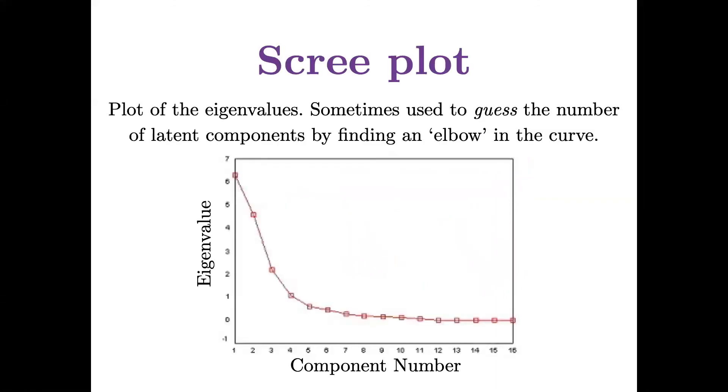A very common way to start is to plot the eigenvalues. So here it's just the eigenvalue along the y-axis and which component it is along the x-axis. So the first eigenvalue is a little more than six. The second eigenvalue is about four and a half. And as the components go on, the eigenvalues should certainly decrease because we order the components by their eigenvalues. And we're looking for an elbow in this curve, a place where the kind of the return and variance you get for using an additional component starts to diminish.